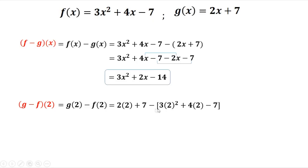So we have 2 squared plus 4 times 2 minus 7. Then you simplify: 2 times 2 that's 4 plus 7, minus 2 squared is 4, 4 times 2 that's 8, then minus 7.